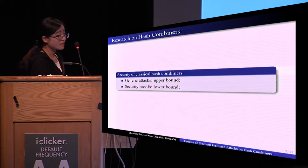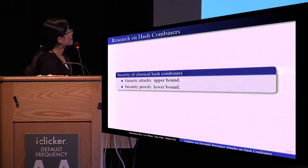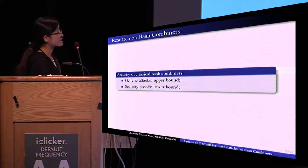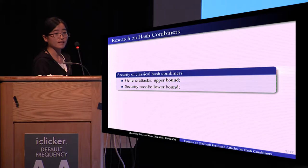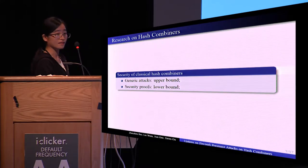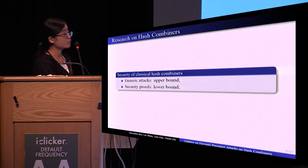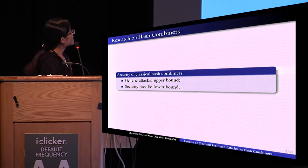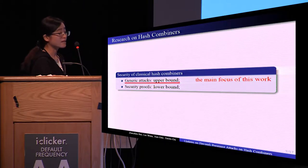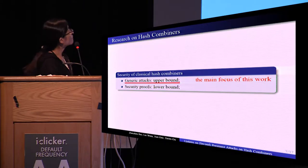There are two research lines on the security of hash combiners. The first is generic attacks, which provide an upper bound on the security. The second is security proofs, which provide a lower bound. This talk mainly focuses on generic attacks.